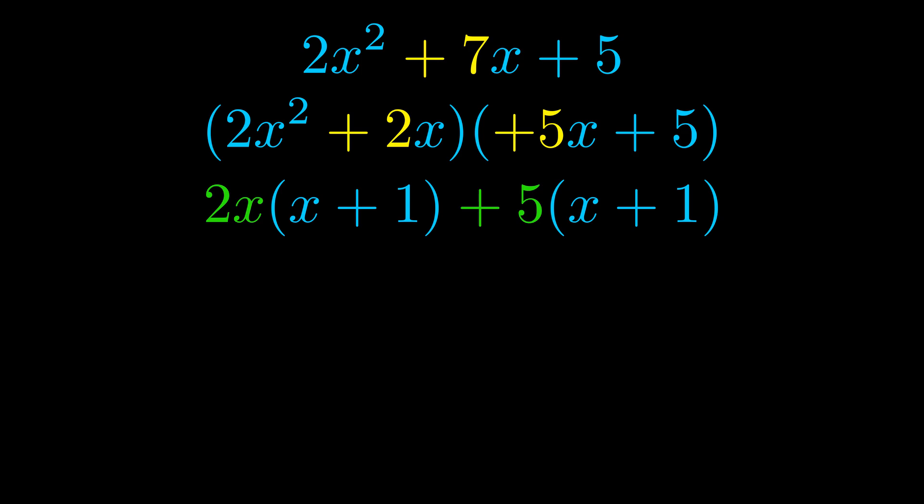Notice also how what remains inside of the parentheses is the same in both cases. The blue values are the same. Those blue values will become one of our factors and we will combine the two green values, the GCFs that we pulled out, to get the other one. And that is our fully factored equation.